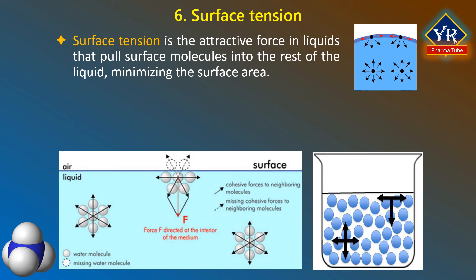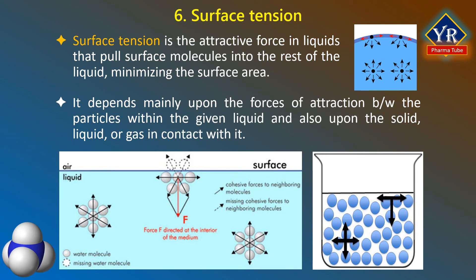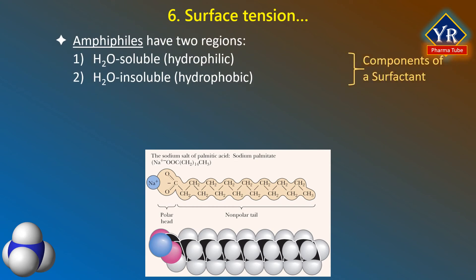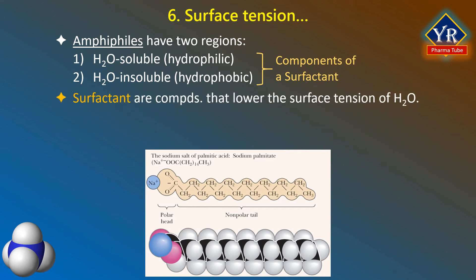Surface tension is the attractive force in liquids that pulls surface molecules into the rest of the liquid, minimizing the surface area. Surface tension depends mainly upon the forces of attraction between particles within the liquid and also upon the gas, solid, or liquid in contact with it. Molecules in the interior of a liquid are attracted in all directions, but molecules at the surface have a net inward attraction that results in surface tension. Amphiphiles are compounds that have a region that likes a solvent and also a region that dislikes the same solvent. Surface tension of water can be reduced by a surfactant at lower concentrations.